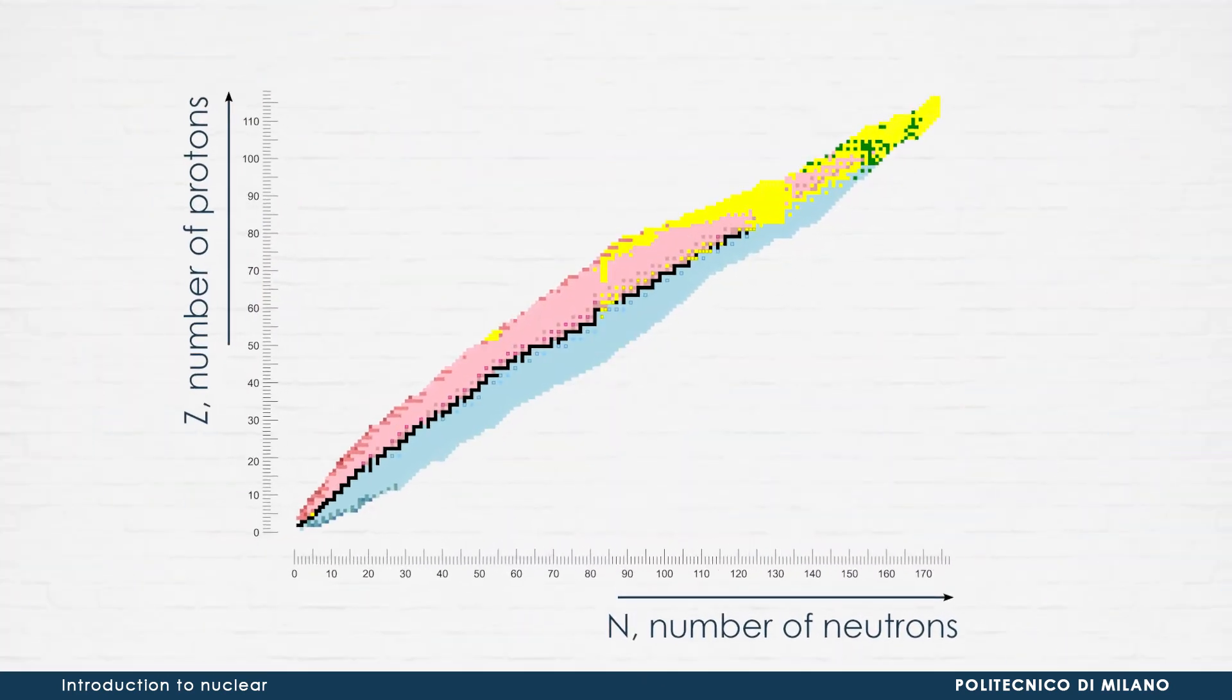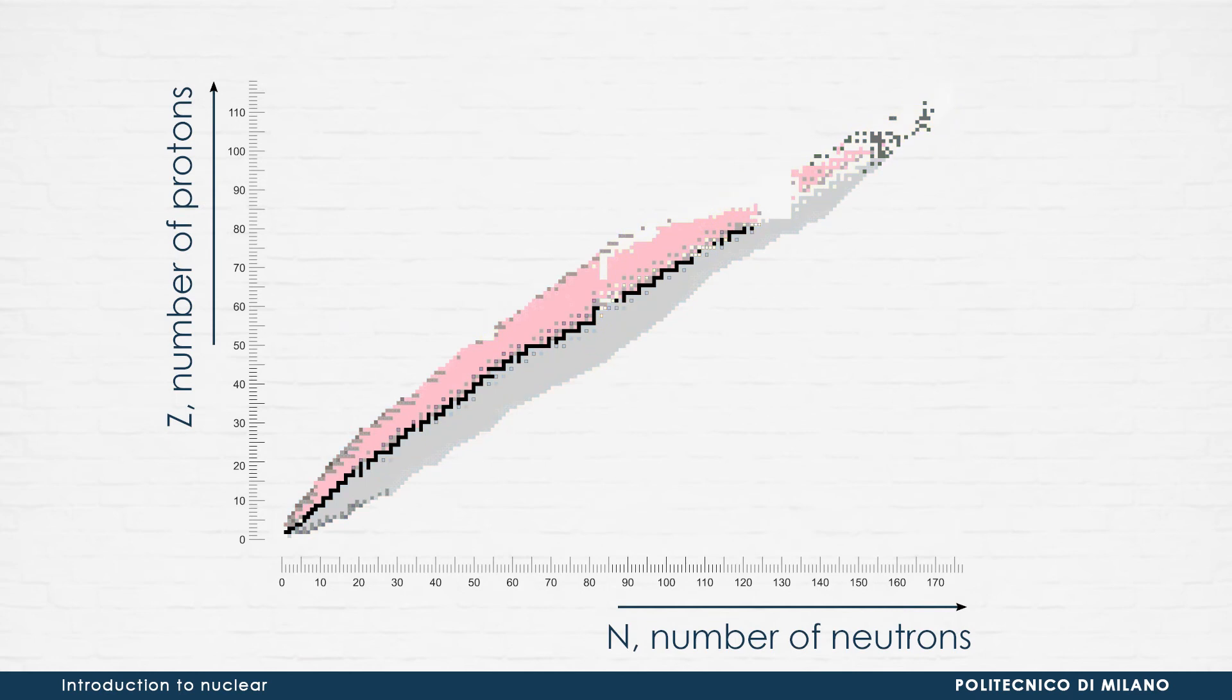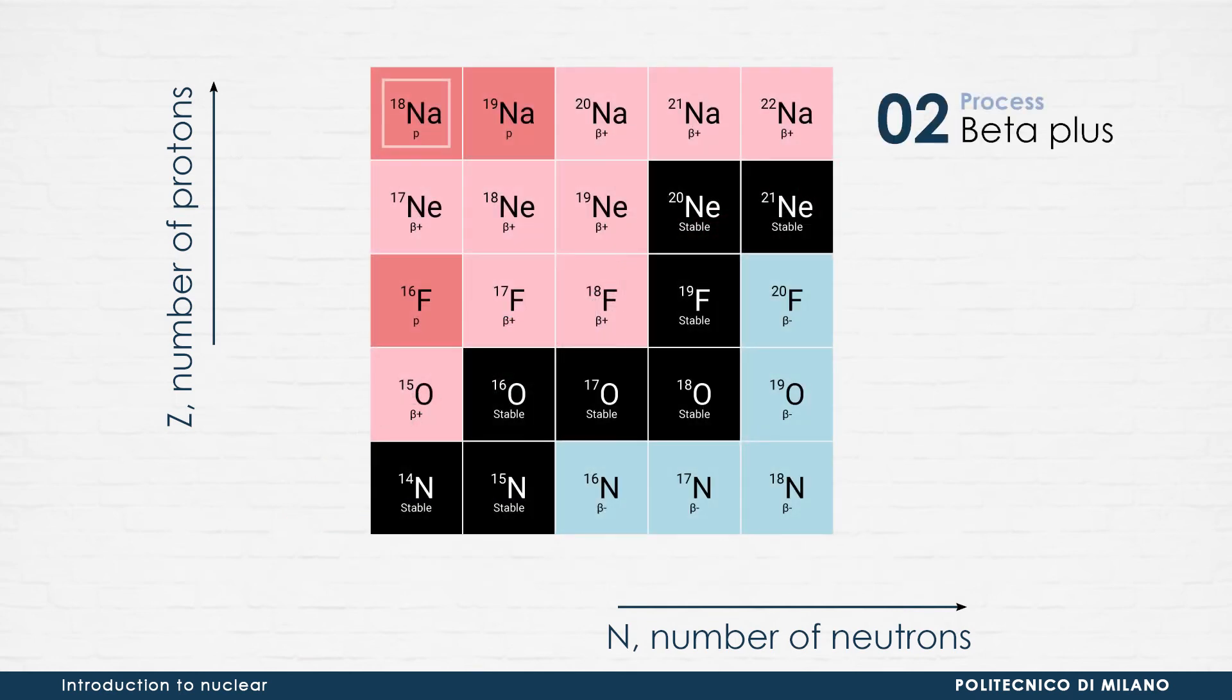Going back to the table of nuclides, the pink regions represent the beta plus decay, in which a proton inside the nucleus spontaneously transforms into a neutron. Thus, a nucleus that decays beta plus decreases its atomic number Z by one, maintaining its mass number A unchanged.